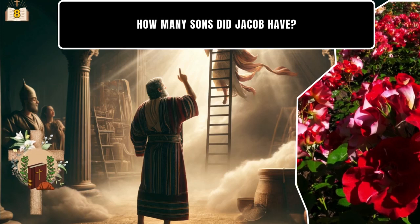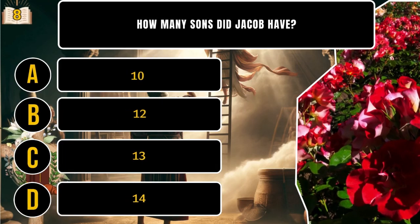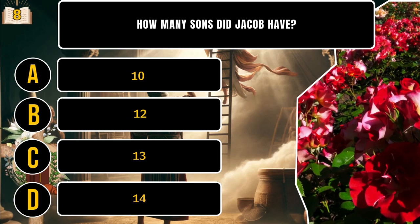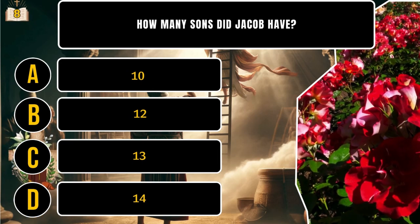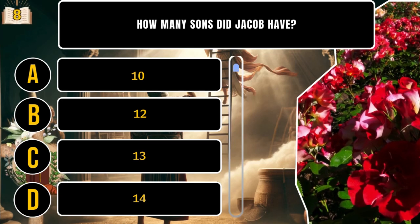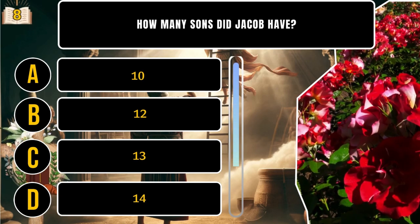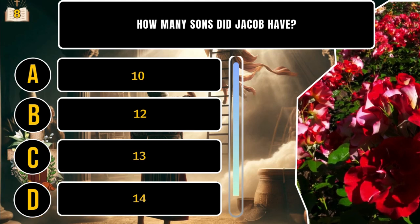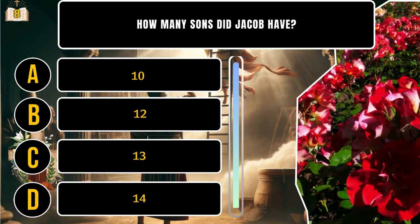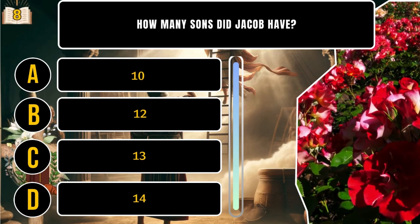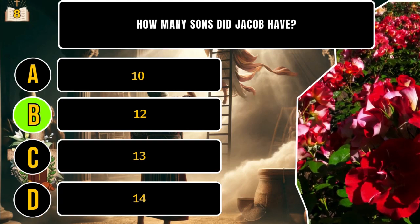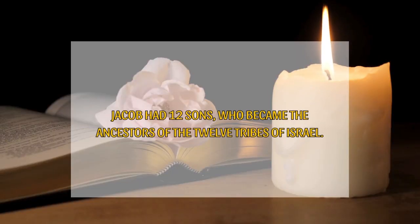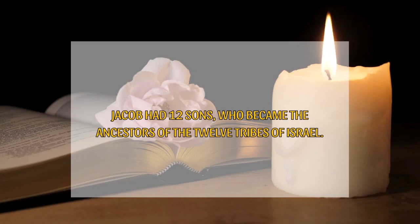How many sons did Jacob have? A. 10. B. 12. C. 13. D. 14. That's B. Jacob had 12 sons, who became the ancestors of the 12 tribes of Israel.